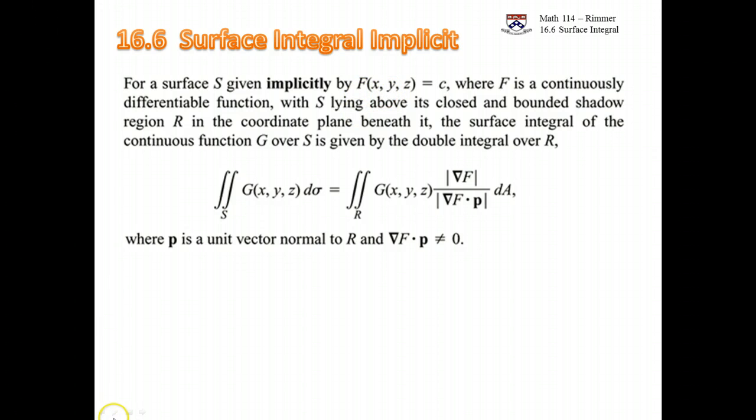We have this function we call capital F. Even if it is where you could solve for z, even if you have z is some lowercase f, even if this is the case, then the way you make up the capital F is just by subtracting it over. So you can make up the capital F of x, y, z by taking z and subtracting the function f. So even if it is explicit, you can do it as if it was implicit.